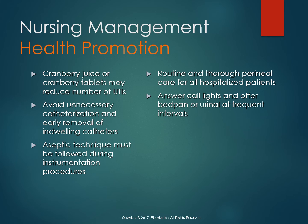It is thought that cranberry juice or the enzymes found in cranberries inhibit the attachment of urinary pathogens like E. coli to the bladder epithelium. So cranberry juice or cranberry tablets might reduce the number of UTIs — patients can buy regular cranberry juice or pills available at certain pharmacies. Routine thorough perineal hygiene is important, especially for hospitalized patients. Having a plan when there is instrumentation for catheterization is important, and I encourage you to look at the American Nurses Association CAUTI Prevention Tool.